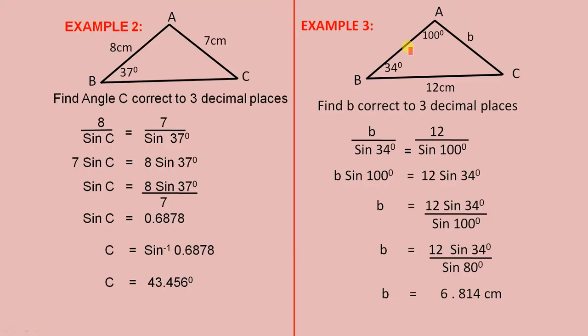Example two. Find angle C correct to three decimal places. So we have 8 over sine C equals 7 over sine 37 degrees.